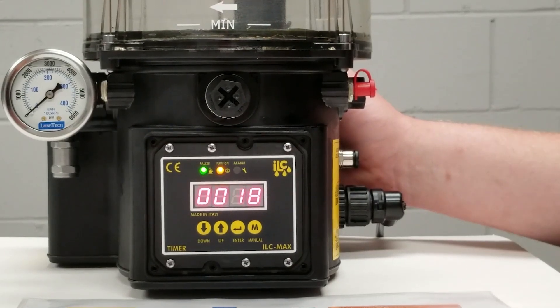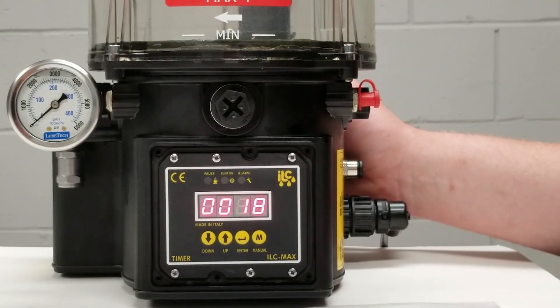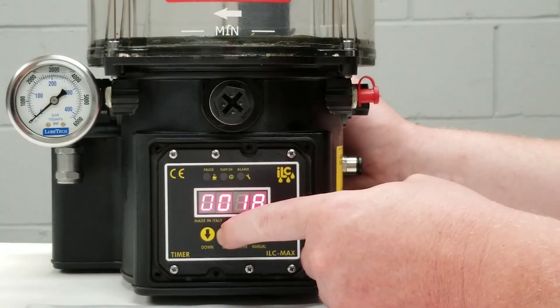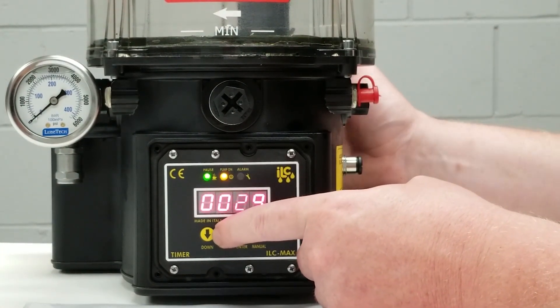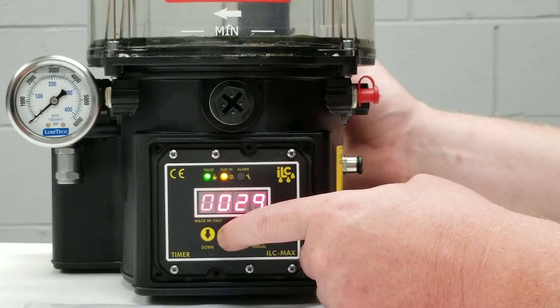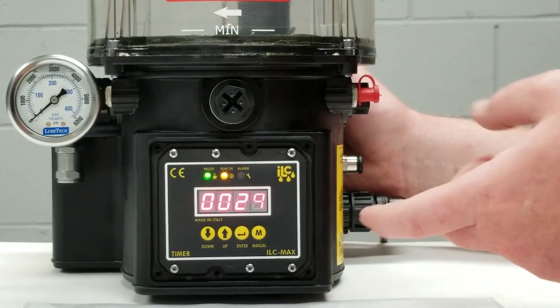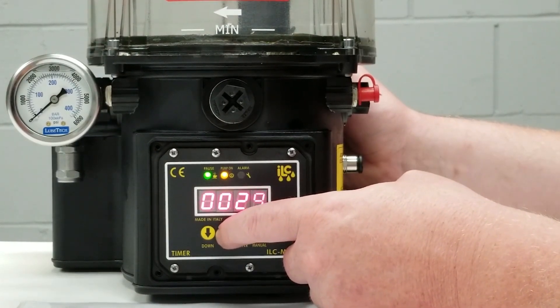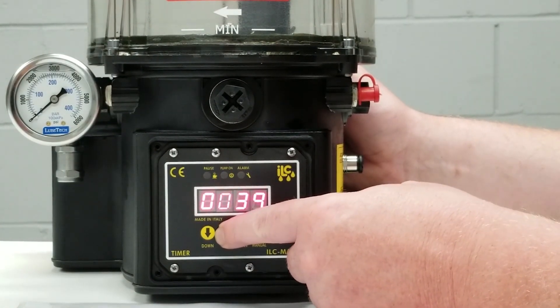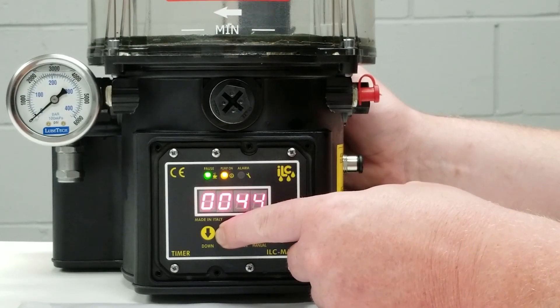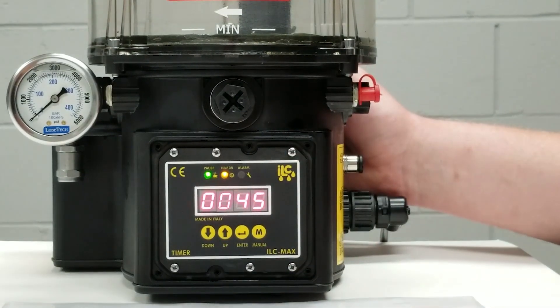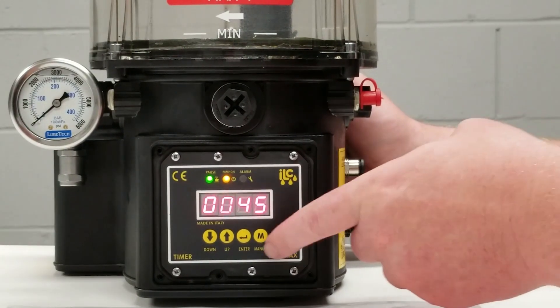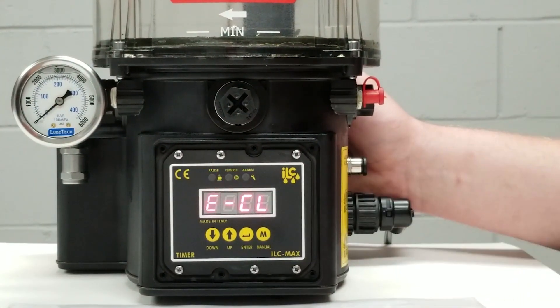So this particular pump is programmed for 18 rotation counts and we can program in more rotation counts. The higher the rotation count, the more lubricant it will deliver. The lower the rotation count, the less lubricant it will deliver. So we're going to change this from 18 rotations. Let's just say we want to change it to 45. We'll program in 45 rotation counts and to exit this again we'll press the M button.